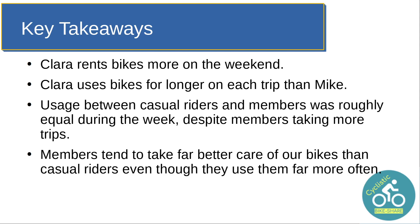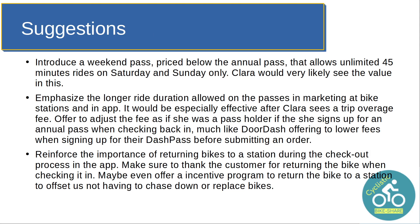Taking those findings, what can we do to help Clara see the value of annual passes? Here's what I would suggest: introduce a weekend pass, priced below the annual pass — probably five to six dollars a month — that allows for unlimited 45-minute rides on Saturday and Sunday only. Clara would very likely see value in that, especially because of her longer ride durations pushing toward 1,800 seconds on Sunday. Imagine Clara returns her bike and gets hit with an overage fee. Similar to how DoorDash offers the DashPass and waives fees when you sign up during an order, we can offer her a weekend or annual pass when she has an overage and adjust the fee as if she already had it when she checks the bike back in.